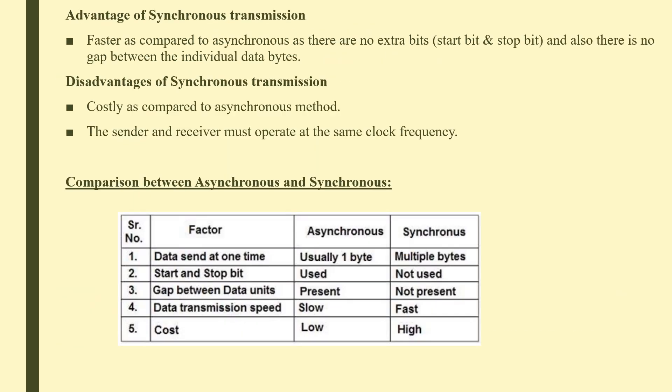Advantages of synchronous transmission: it is faster than asynchronous because there are no extra start/stop bits and no gaps between bytes. Disadvantages: it is costly because it requires local buffer storage and accurately synchronized clocks at both ends, with sender and receiver operating at the same clock frequency.